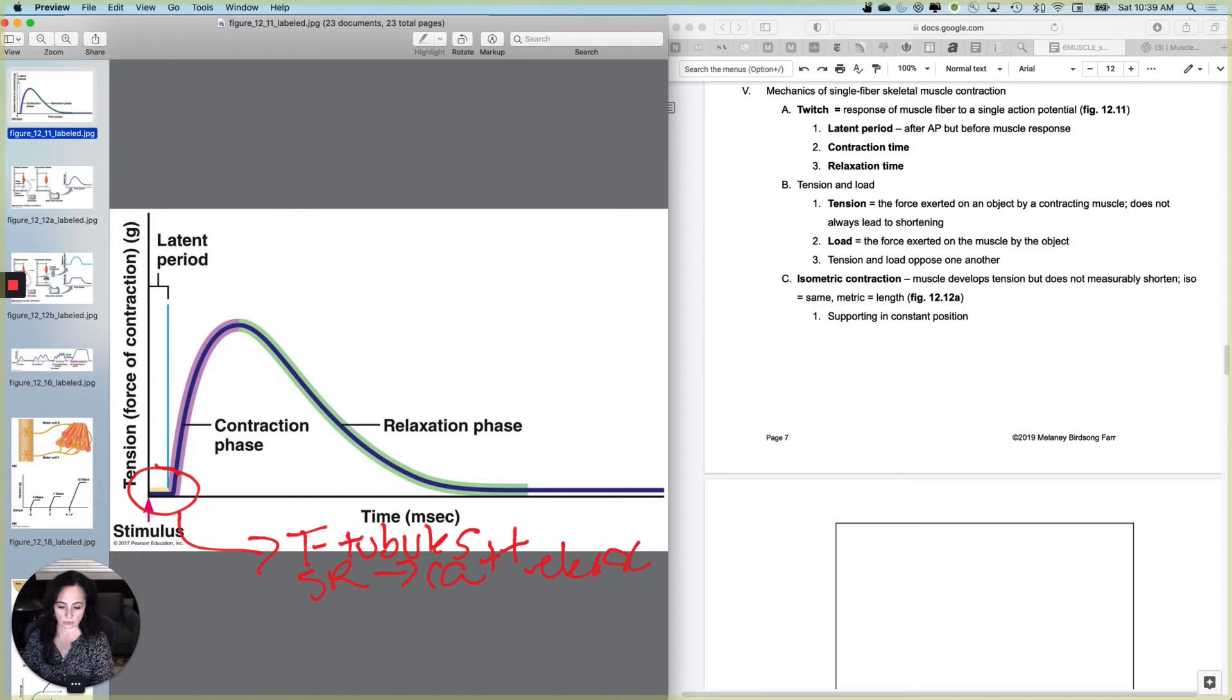And then it has to, calcium has to bind to troponin. And then tropomyosin has to move. And then after tropomyosin moves, you're almost there because then I get crossbridge formation.